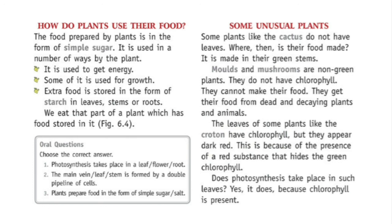In plants like croton, it is because of the presence of a red substance that hides the green chlorophyll. Does photosynthesis take place in such leaves? The answer is yes, it does, because chlorophyll is present — we just cannot see it. So students, that was all for today. This was a reading session for the lesson 'Plants Preparing and Storing Food,' and we are still left with some topics which will be covered in the next session. Take care, bye bye!